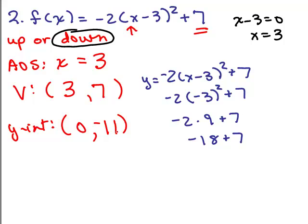This will help you when graphing: if you plot the vertex point and the y-intercept, you know there's a corresponding point on the other side of the axis of symmetry.